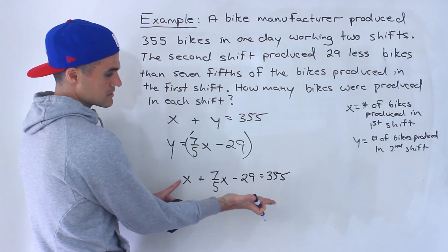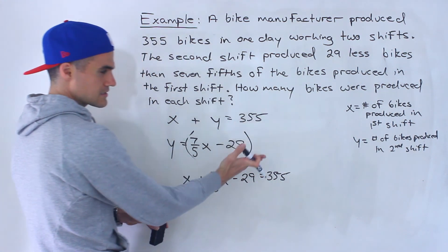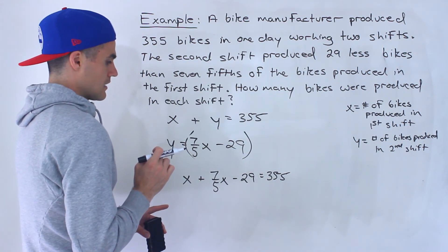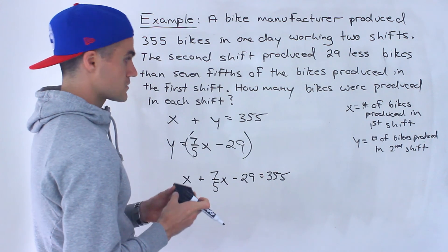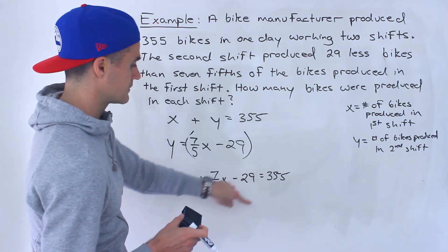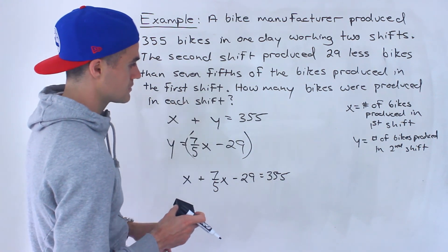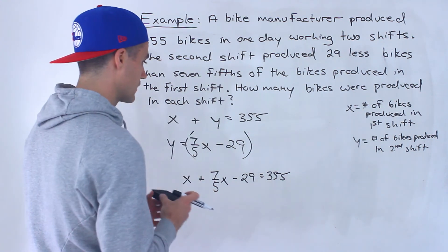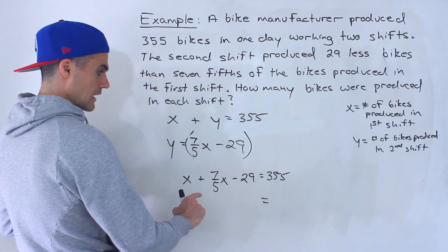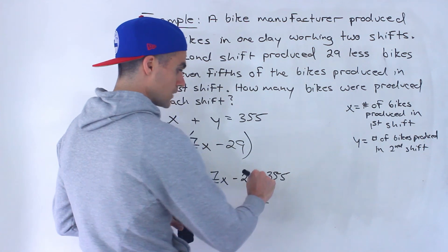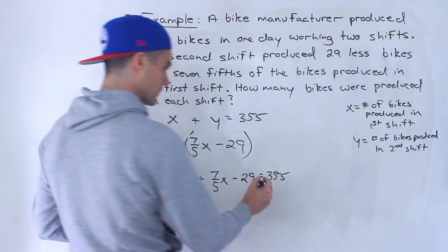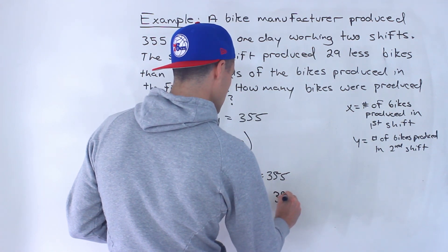We could have also made this expression right away — we didn't necessarily need two equations. We could have just had one variable x for the number of bikes produced in the first shift and created an expression for the second shift. But personally, I like to have two variables. Now we bring the negative 29 over, so we have 355 plus 29, which gives us 384.